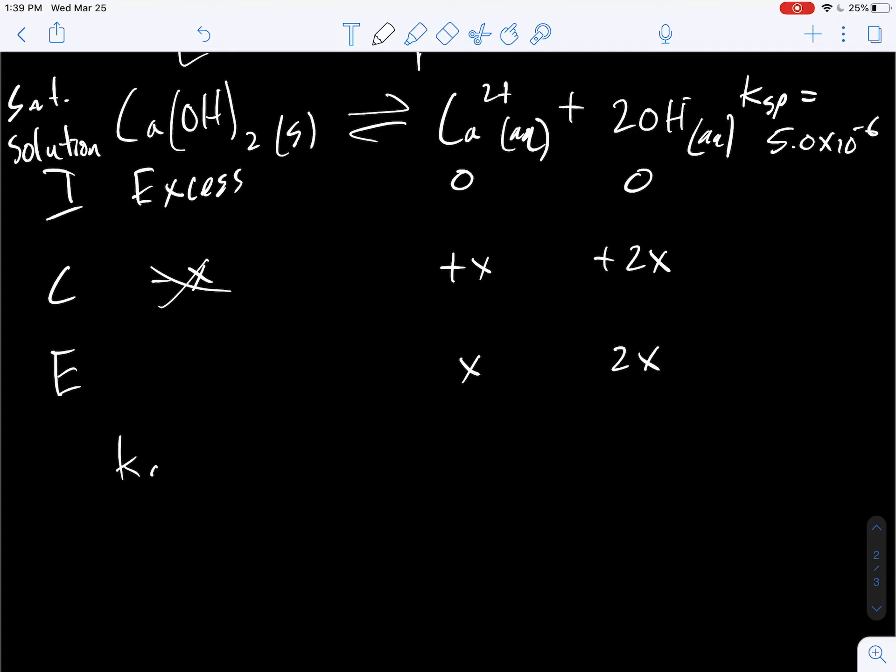So remember, what does Ksp equal? It's just the products of our ions multiplied by each other to their coefficients. Remember the coefficients. This is easy to forget. Remember that. Remember that's squared from this 2 up here. And now let's replace all of this with x times 2x squared. And I'm going to put my Ksp value over here.